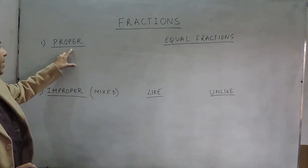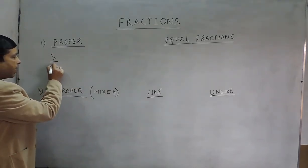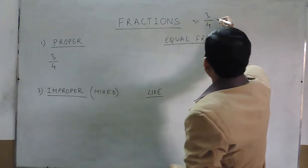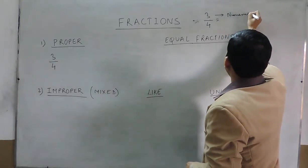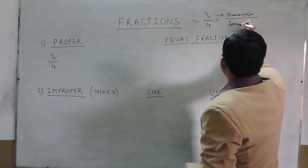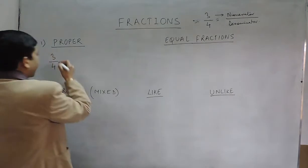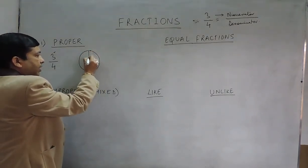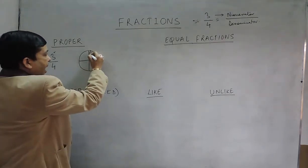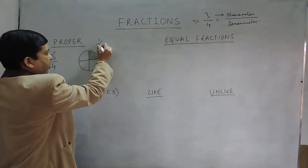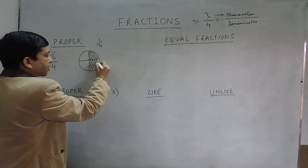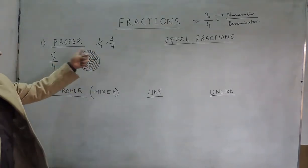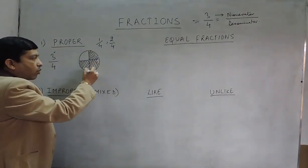When I say proper fraction, it is basically a part out of one. For example, the number 3 upon 4. Fractions are in the form where the upper part is known as the numerator and the lower part is known as the denominator. In a proper fraction, the numerator must be less than the denominator. If one object is divided into 4 parts, we can take 1 part (1 upon 4), 2 parts (2 upon 4), or 3 parts (3 upon 4). All these are known as proper fractions — each is a part of only one object.